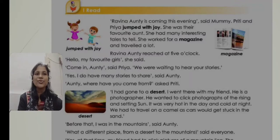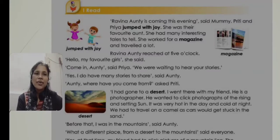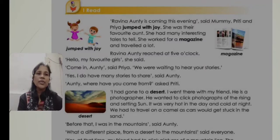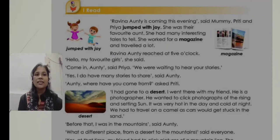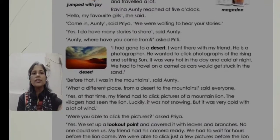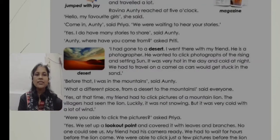'Come in, Auntie!' said Priya. 'We were waiting to hear your stories.' 'Yes, I do have many stories to share,' said Raveena Auntie. 'Auntie, where have you come from?' asked Priya. 'I had gone to a desert. I went there with my friend — he is a photographer. He wanted to click photographs of the rising and setting sun. It was very hot in the day and cold at night. We had to travel on a camel, and cars would get stuck in the sand.'